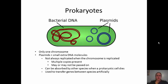Prokaryotic cells have one singular chromosome, and that chromosome is not associated with any type of proteins — we typically refer to that as being a naked DNA, typically found in the nucleoid region of the prokaryotic cell. Prokaryotes often also have something called a plasmid, and you can see some plasmids here in this cartoon drawing of a bacterial cell.